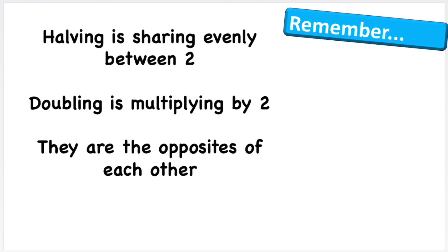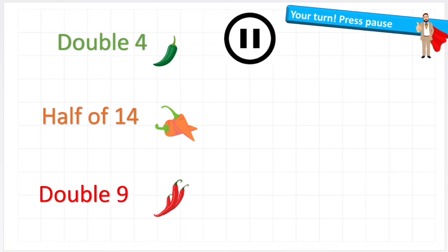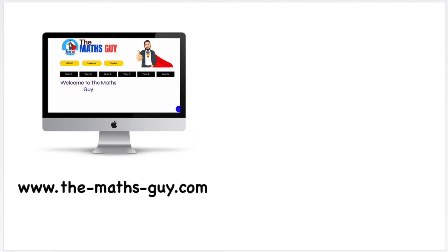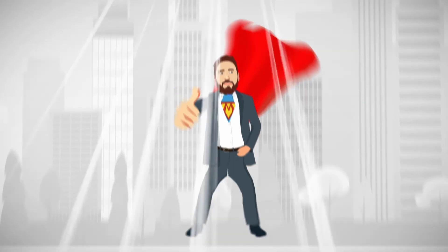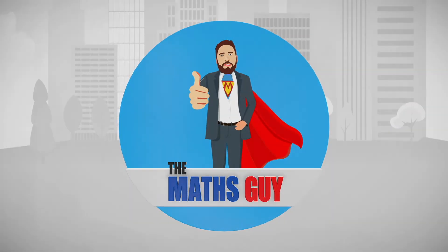Let's have a look at things to remember: halving is sharing evenly between two, doubling is multiplying by two, and they are the opposite of each other. Here are three questions — a green chili, an orange chili, and a much harder red chili. Put your answers into the comment section and I'm going to try and mark them all. Hopefully this has been useful — this has been all you need to know about halving and doubling. I'll see you in another video. Peace out.